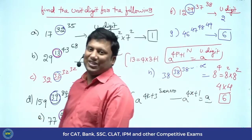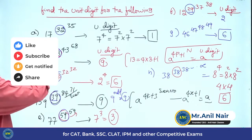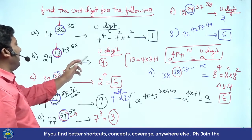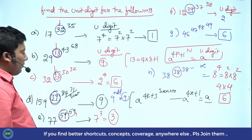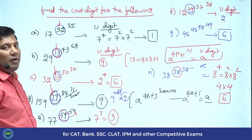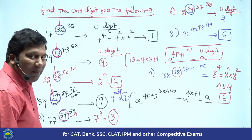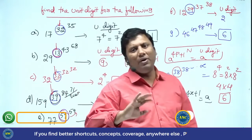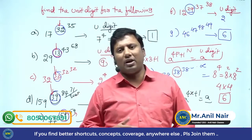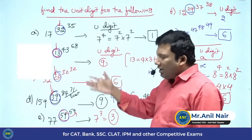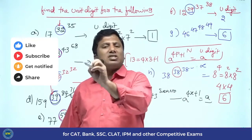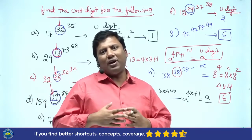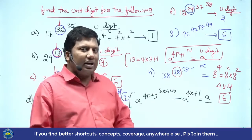One more example: 38 power 38 power 38... up to countable infinite. First power: 4 nines are 36 plus 2, so 4k plus 2 to the power n gives A power 4. 8 to the power 4 is 8 squared into 8 squared — unit digit is 4. Summary: A power 4k is A power 4, A power 4k plus 1 is A, A power 4k plus 3 with odd power gives A cubed. Power to power is no more a confusing topic. Create your own questions, take a notebook, and start deriving answers — the best way to learn a concept is to create questions on your own.